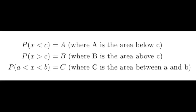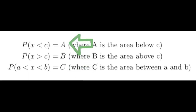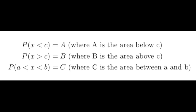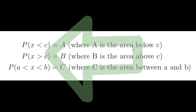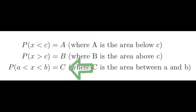Let's recap: R has a built-in probability function and a built-in quantile function that solves the first type of probability equation. Since the total area under a probability distribution curve is 1, that fact helps us solve the second type. In this section, we're going to look at strategies for solving the third type of probability equations.